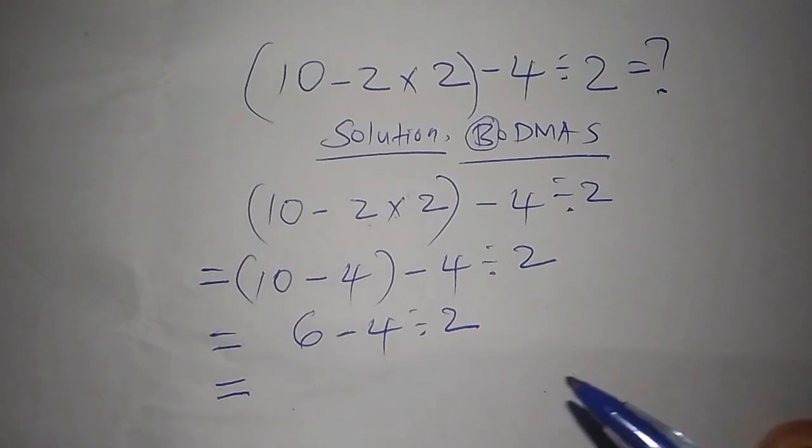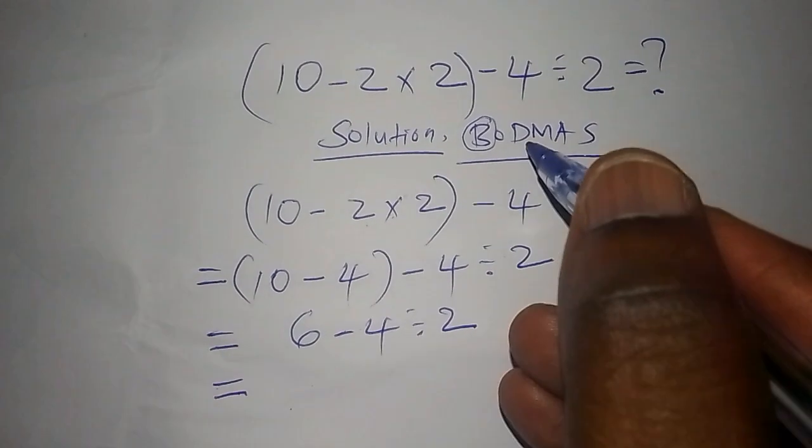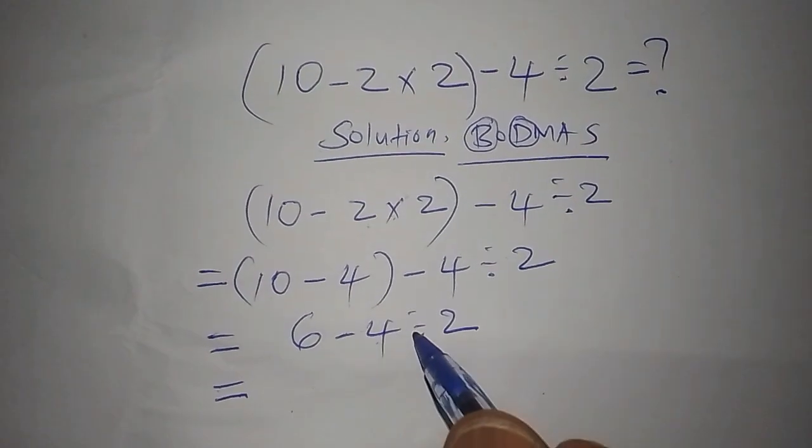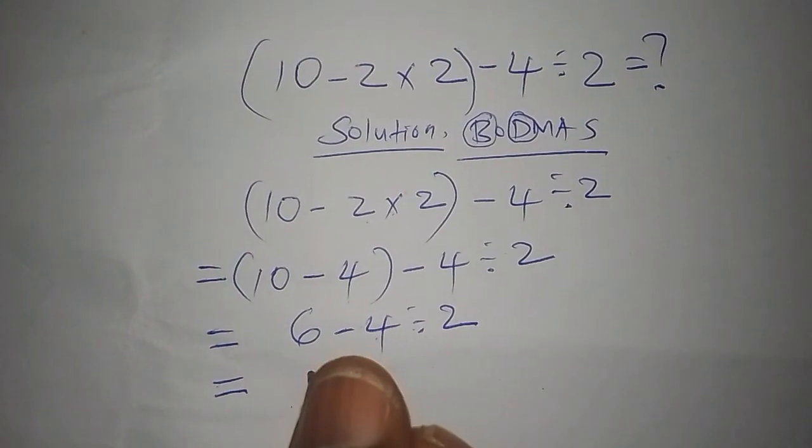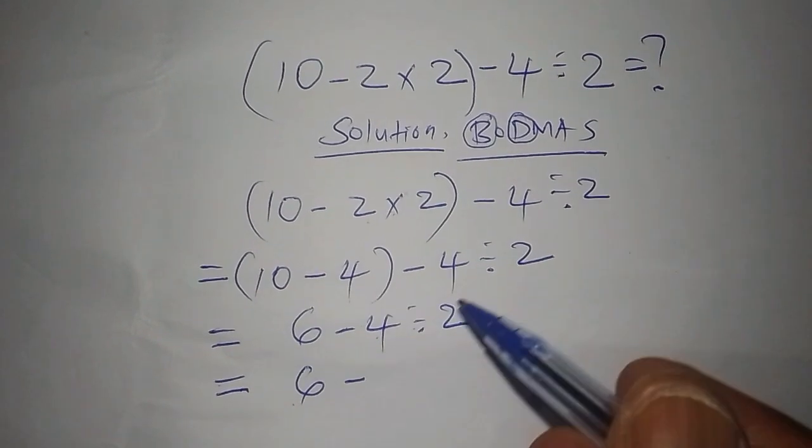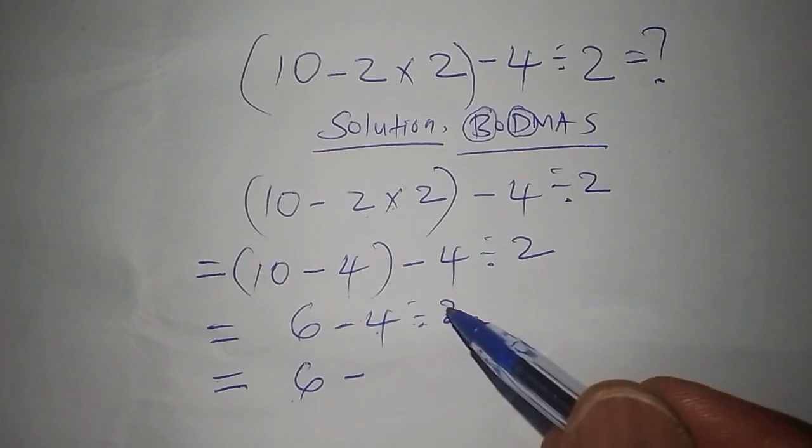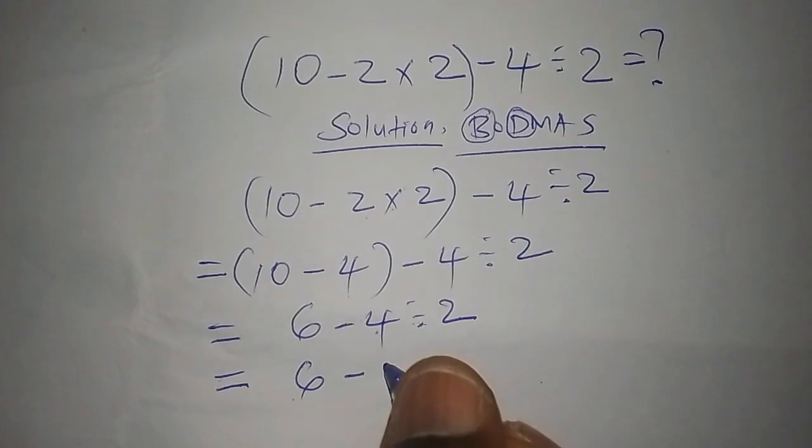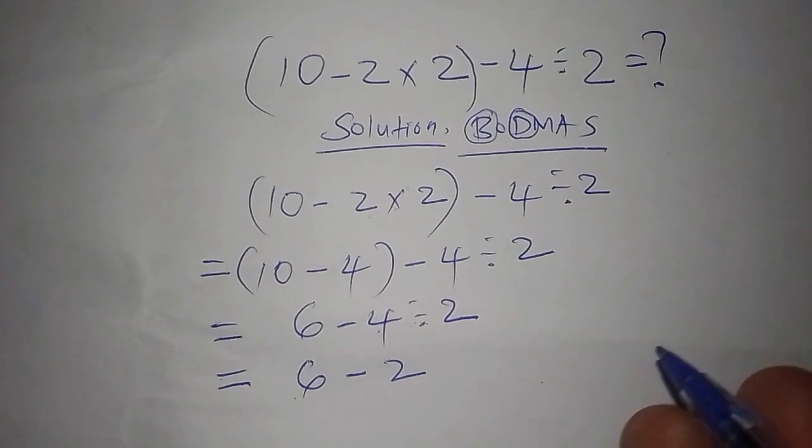After the bracket we have what is called division. So we are going to divide: 4 divide by 2. We shall now say this is 6 subtract 4 divide by 2. And 4 divide by 2, the answer is 2.